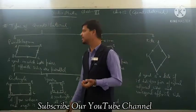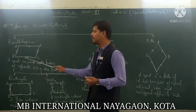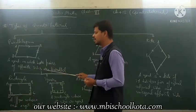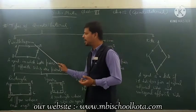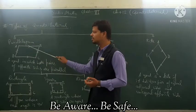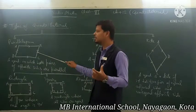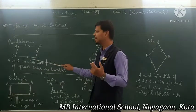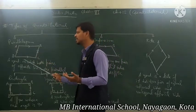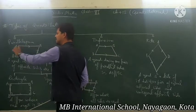What are the types of quadrilateral? The first type of a quadrilateral is parallelogram. A parallelogram is a quadrilateral in which both pairs of opposite sides are parallel. That means in a quadrilateral, remember, two pairs of opposite sides are parallel.